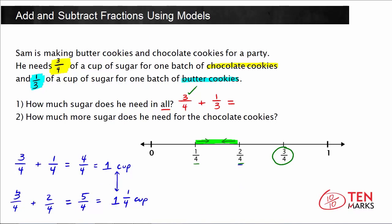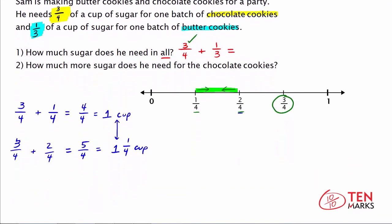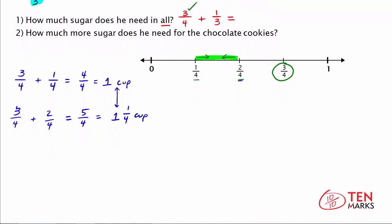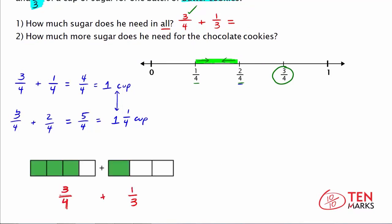Now let's find the exact answer. I'll pull this page down to make some space while keeping all the important information. Let's look at a model for 3 fourths plus 1 third. We need to make these fractions like fractions, which means taking each whole and dividing it into the same number of equal parts.